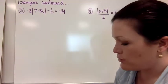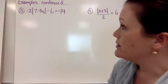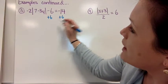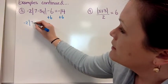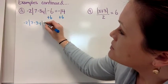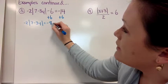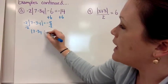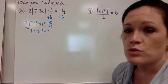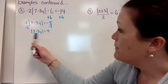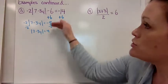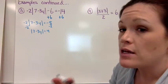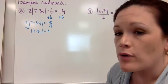For example three, we need to get the absolute value by itself — it's definitely not that way yet. The first step is to add six to both sides, giving us negative two times the absolute value of seven minus three y equals negative eight. Then divide by negative two, and we get the absolute value of seven minus three y equals four. Notice it's now equal to a positive number, so don't stop too early and assume no solution. Get it by itself first.